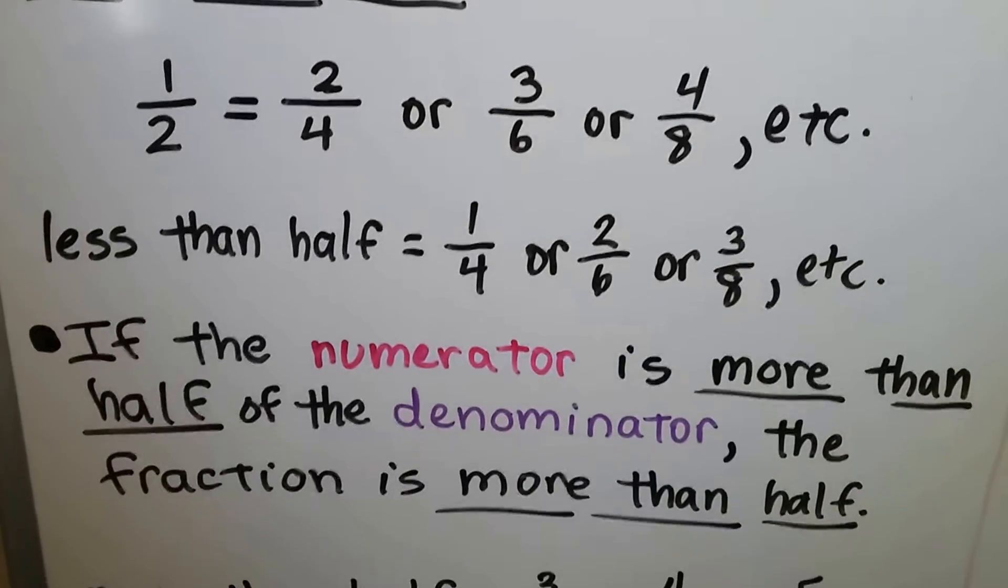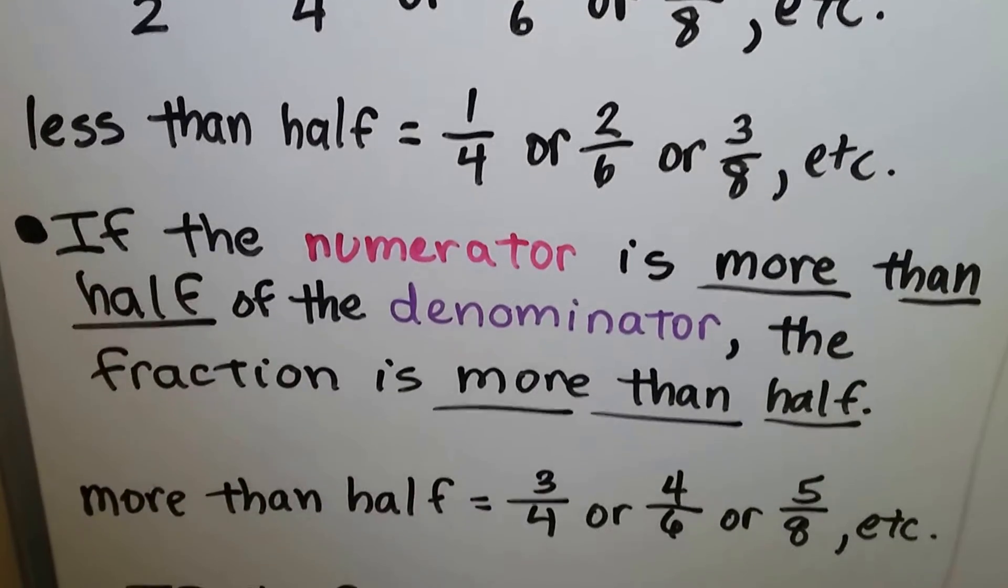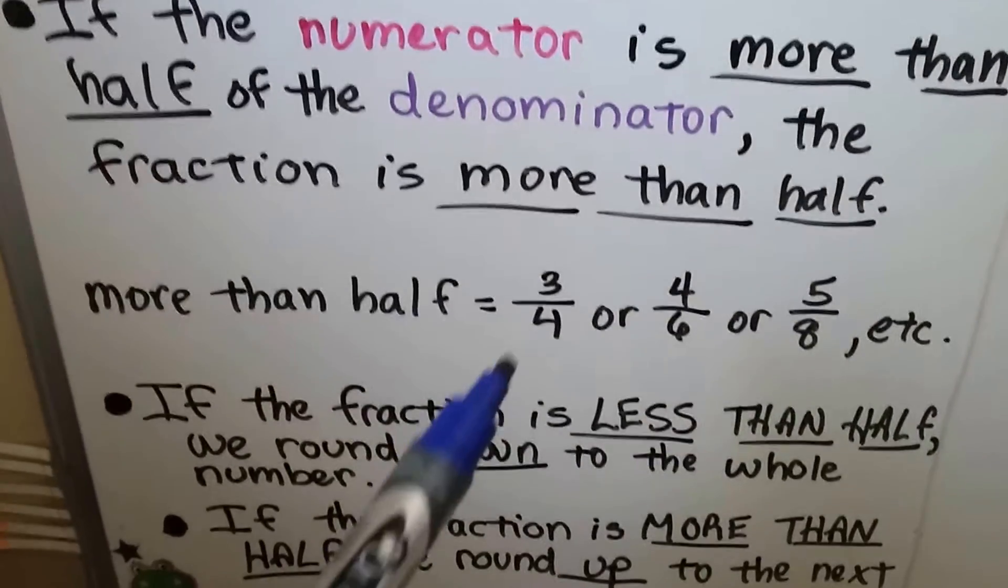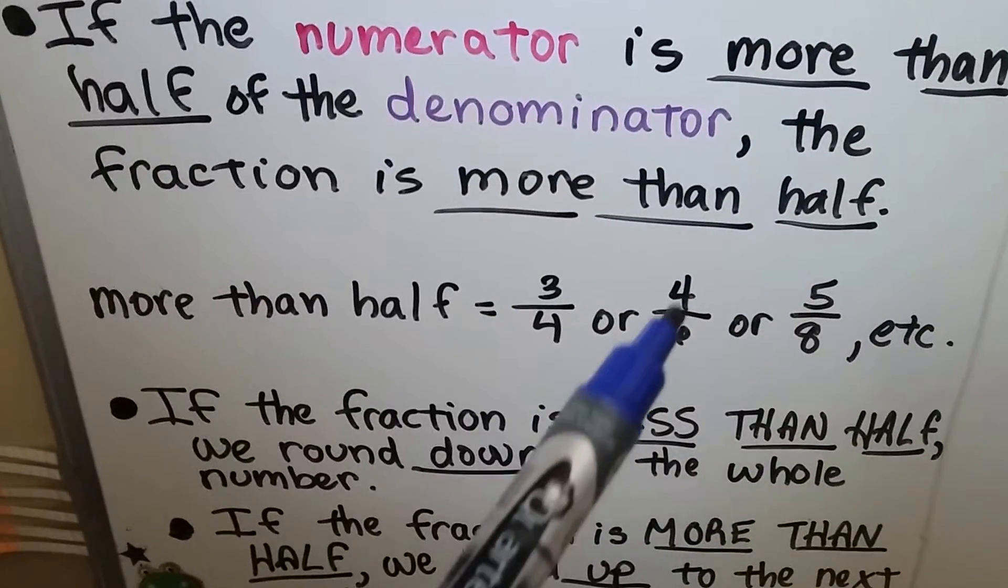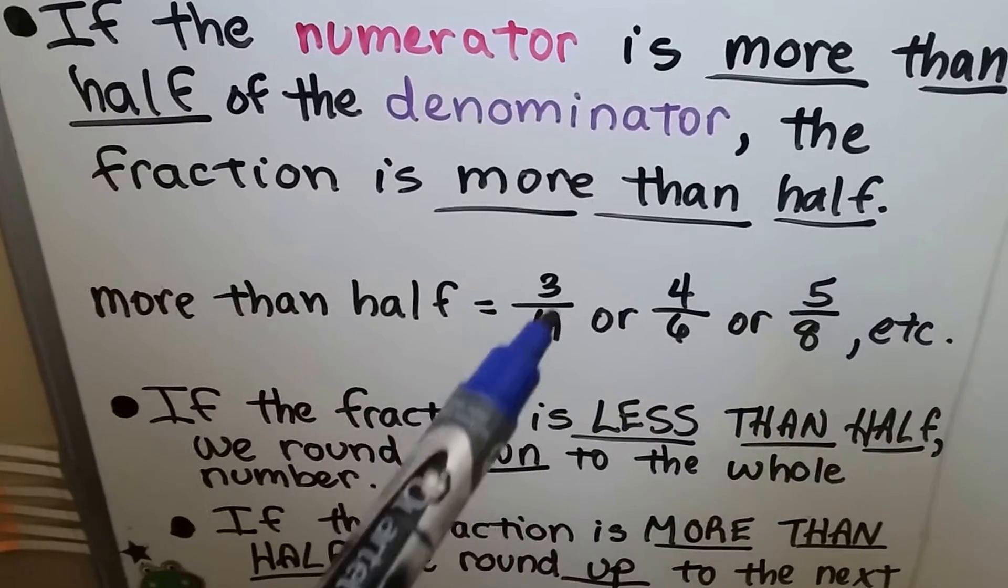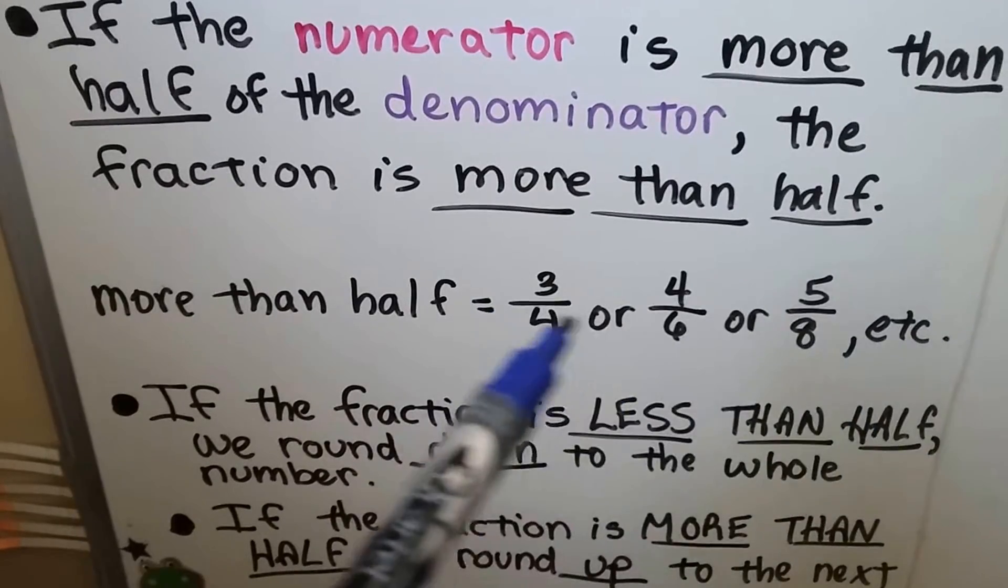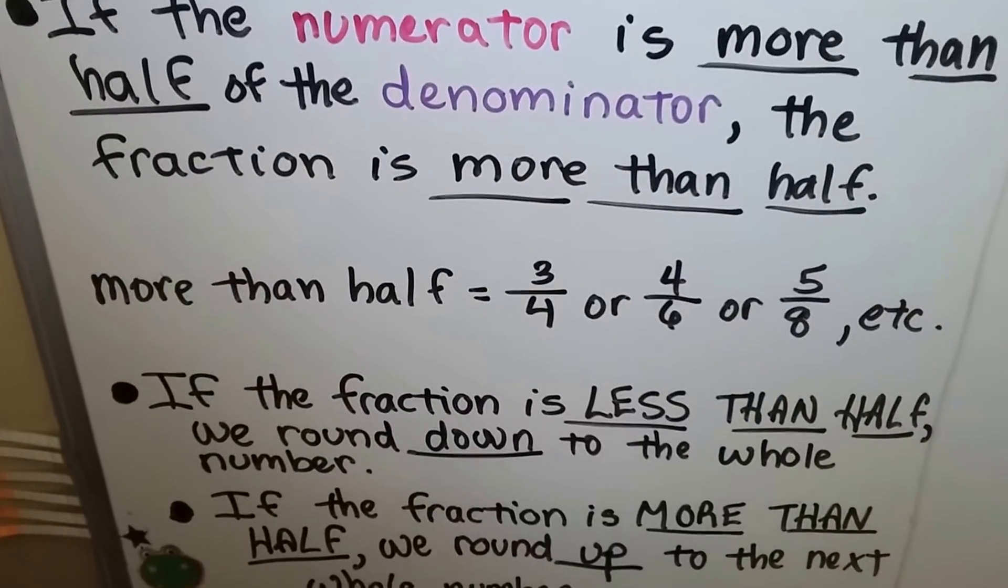If the numerator is more than half of the denominator, the fraction is more than half. So if we have 3 fourths, or 4 sixths, or 5 eighths, those are more than half of the denominator, so we would round these up.